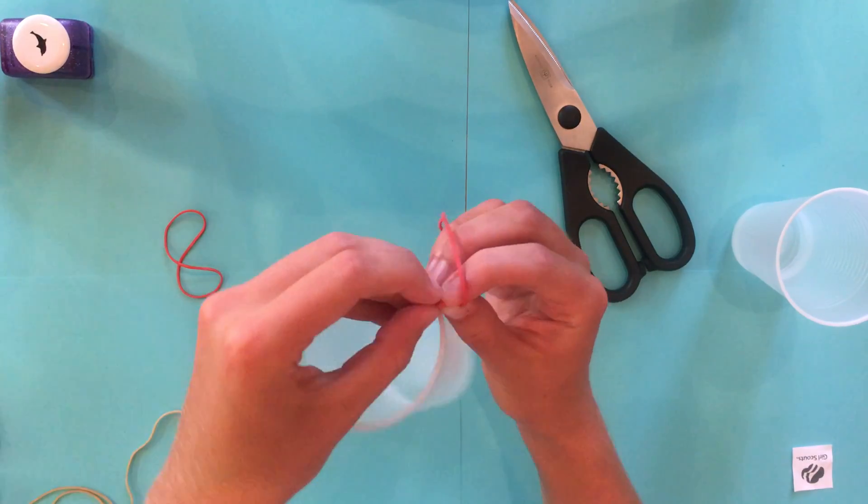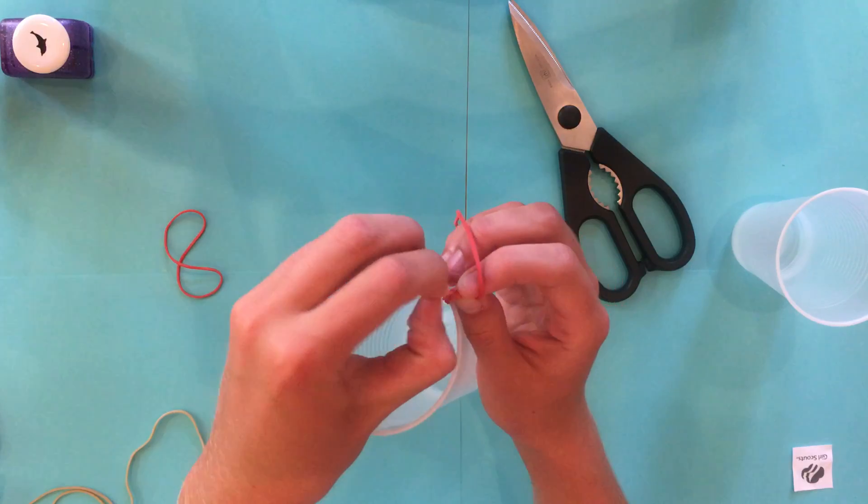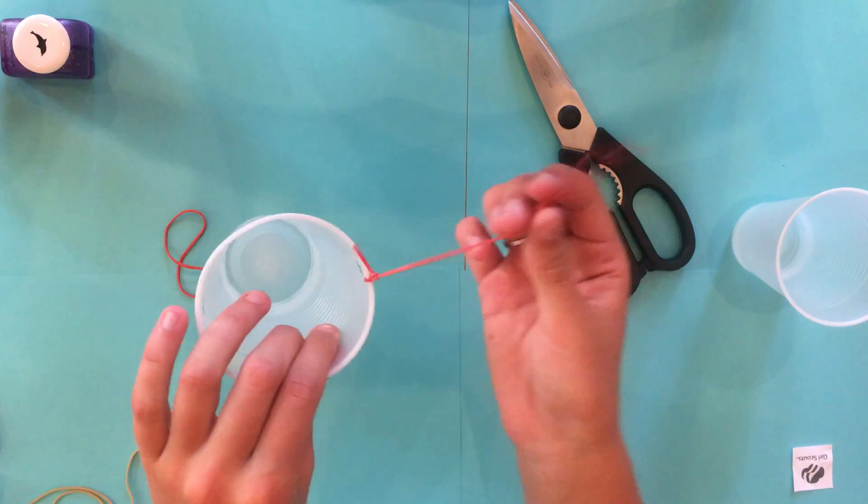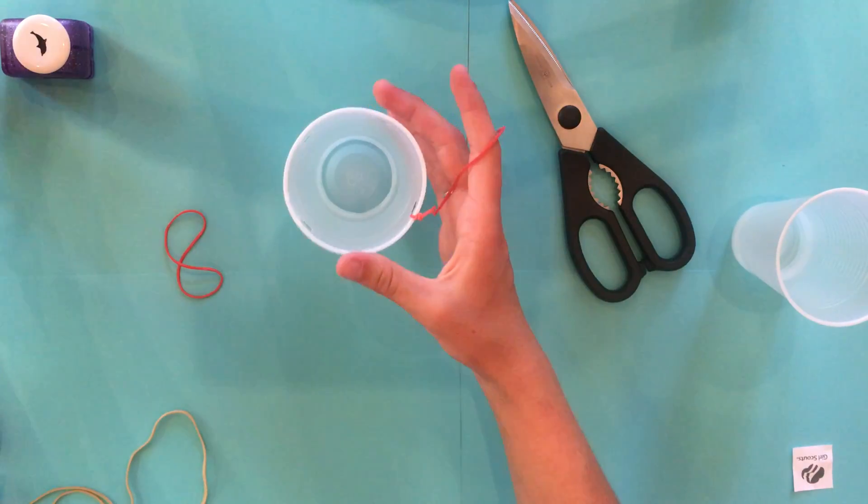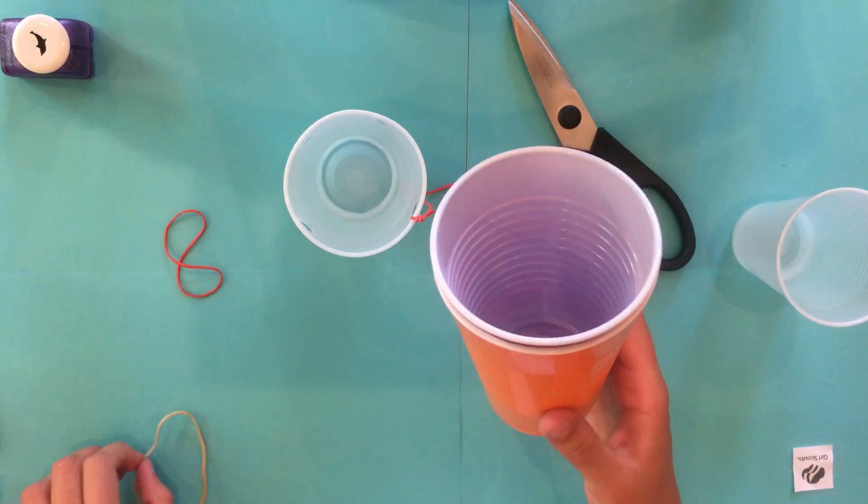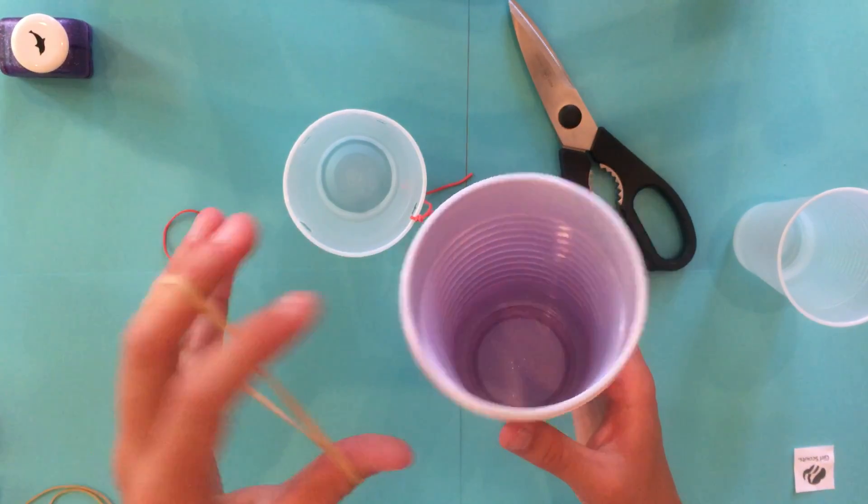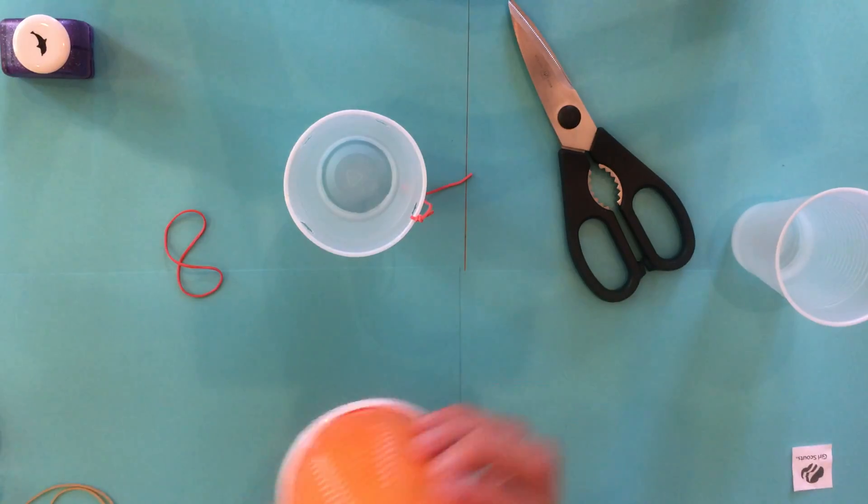Depending on what type of cups you use, if you're using flimsy cups like these, you'll want a thinner rubber band. If you're using heavy-duty Solo cups, you'll want a thicker rubber band so your cup launches farther.